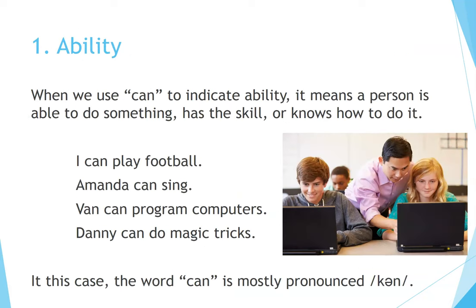1. Ability. When you use CAN to indicate ability, it means a person is able to do something, has the skill, or knows how to do it. For example: I can play football. Amanda can sing. Van can program computers. Danny can do magic tricks. In this case, the word CAN is mostly pronounced 'can'.